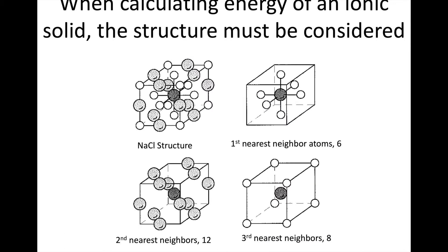To get this Madelung constant — and we're not going to work through all the calculations — I want you to see the structure of this. If we take the sodium chloride or rock salt structure and think about a reference ion in the middle, the first thing we look at is the first nearest neighbor ions. There are six of them, so this reference ion is coordinated by six closest ions of the opposite sign.